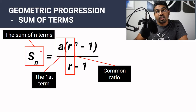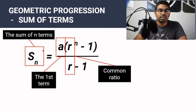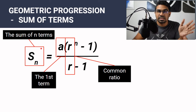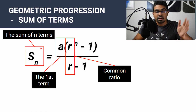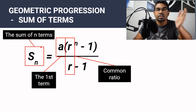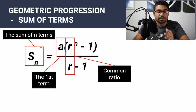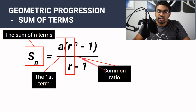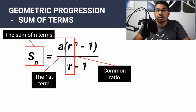Sn refers to the sum of n terms. When dealing with sum of n terms, just like in arithmetic progression, it must start from the first term — the sum of the first term up to the nth term. Sn is the sum of n terms, A is the first term, and R is the common ratio.